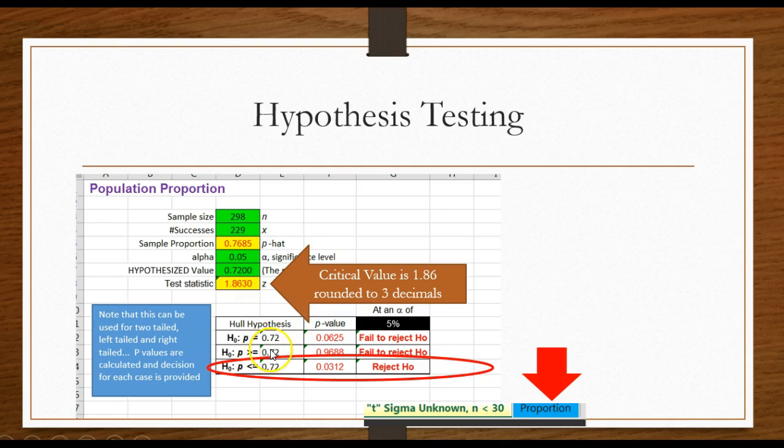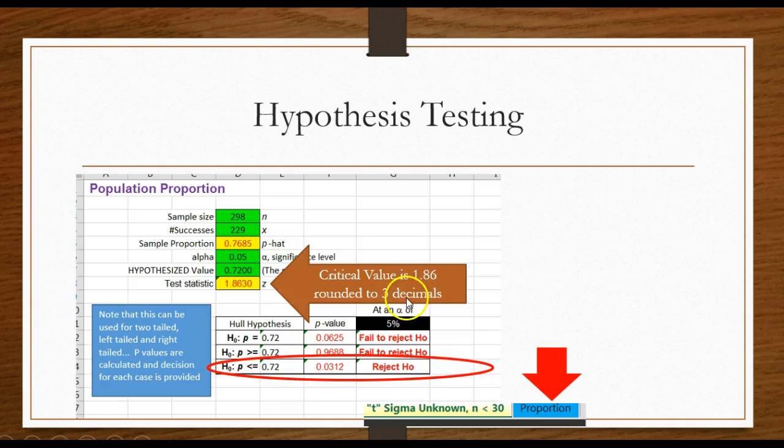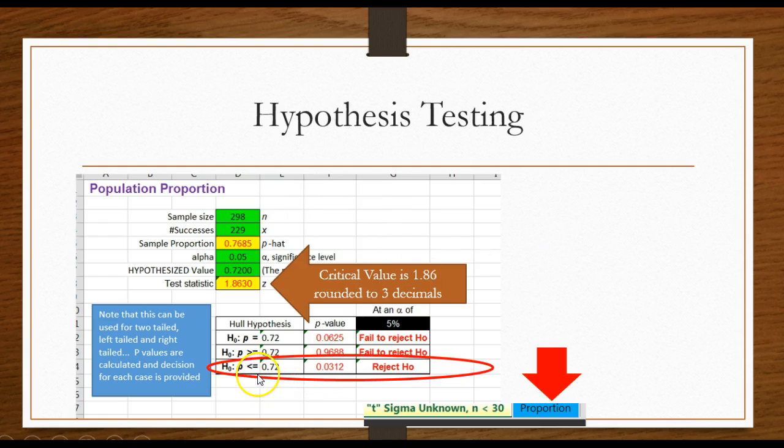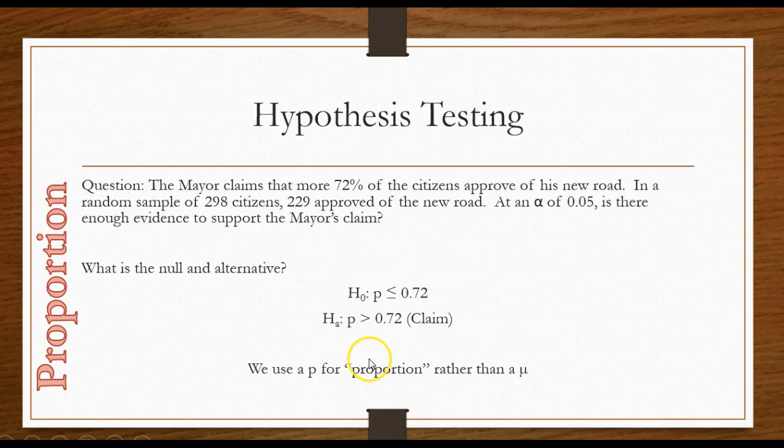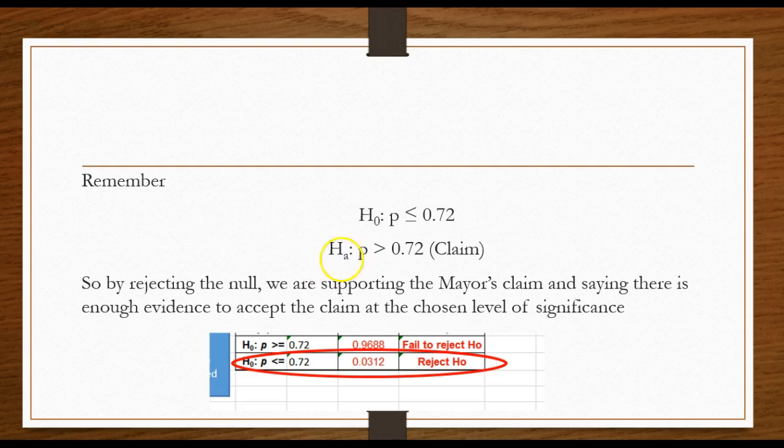It gives me the critical value to four decimal places. So if I rounded it to 2, it would be 1.86. Now remember what my hypothesis was, alright? The null was that it is less than or equal to 0.72, so find less than or equal to down here. So if we look out to the right, we reject the null. Here's my p-value, here's my test statistic. We reject the null. And by rejecting the null, we are accepting the claim in this case, or we're saying there's enough evidence to accept the claim. So by rejecting the null, we are supporting the mayor's claim that it's greater than 72%.